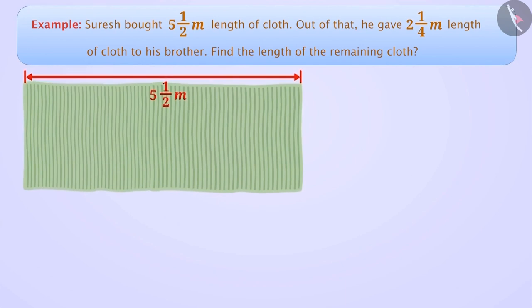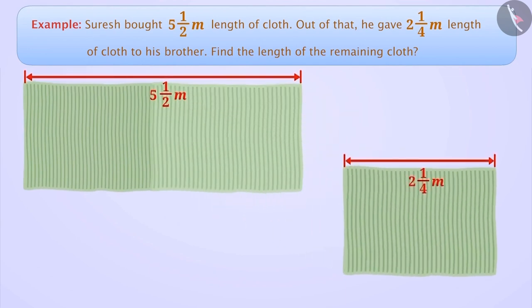Suresh bought 5 and 1/2 meter length of cloth. Of that, he gave 2 and 1/4 meter length of cloth to his brother. Find the length of the remaining cloth.